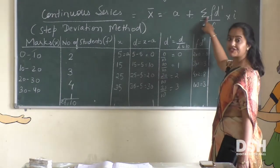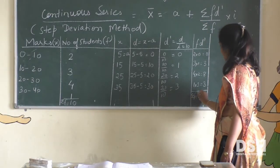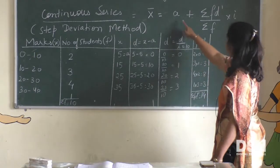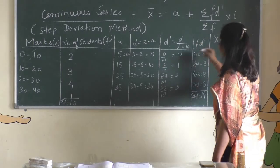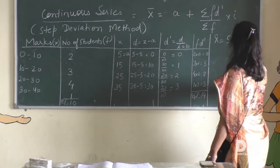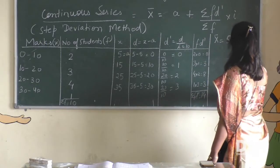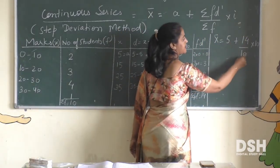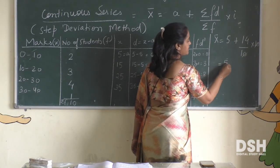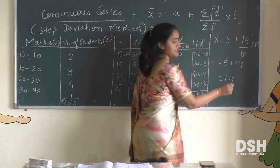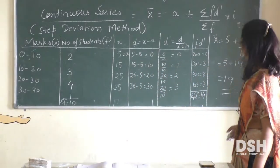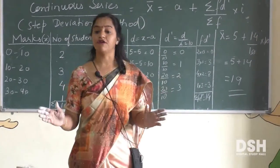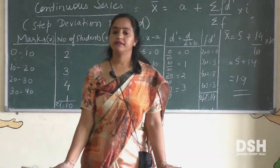Summation of f·d' = 0+3+8+3 = 14. Now apply the formula: mean = A + (sigma f·d' / sigma f) × i = 5 + (14/10) × 10. Simplify: 10 divided by 10 is 1, so 5 + 14 = 19. On average every student is getting 19 marks. These are the three basic formulas for three different series.